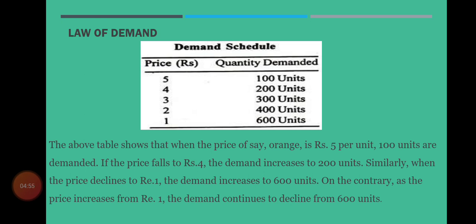Commodity کی price 5 ایک زیادہ قیمت ہے، اس لیے لوگ اس commodity کو زیادہ purchase نہیں کر پاتے — پوری market میں صرف 100 units demand کیے جا رہے ہیں۔ Price کم ہو کر 5 سے 4 ہو جاتی ہے تو کم ہوتی ہوئی price کی وجہ سے لوگوں کی purchasing power بڑھ جاتی ہے — 100 کے بجائے 200 units commodity کے demand کیے جا رہے ہیں۔ گویا price میں ایک fall سامنے آیا تو quantity demanded میں اضافہ ہو گئی۔